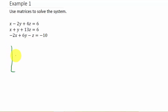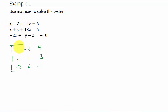Let's write this as a matrix. The coefficients are: 1, negative 2, 4 for the first row; 1, 1, 13 for the second row; and negative 2, 6, negative 1 for the third row. These are the coefficients of the variables — the 1 in front of X, negative 2 in front of Y, 4 in front of Z, and so on. Then I draw a line to represent the equals sign, and on the right side I have 6, 6, and negative 10.